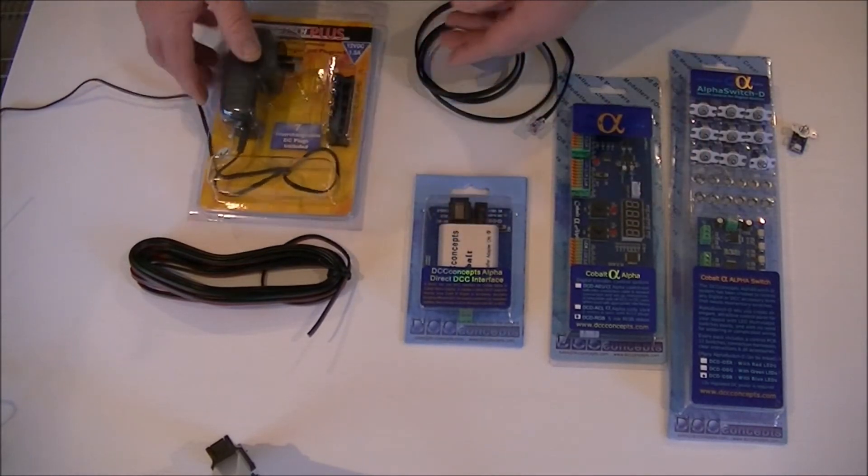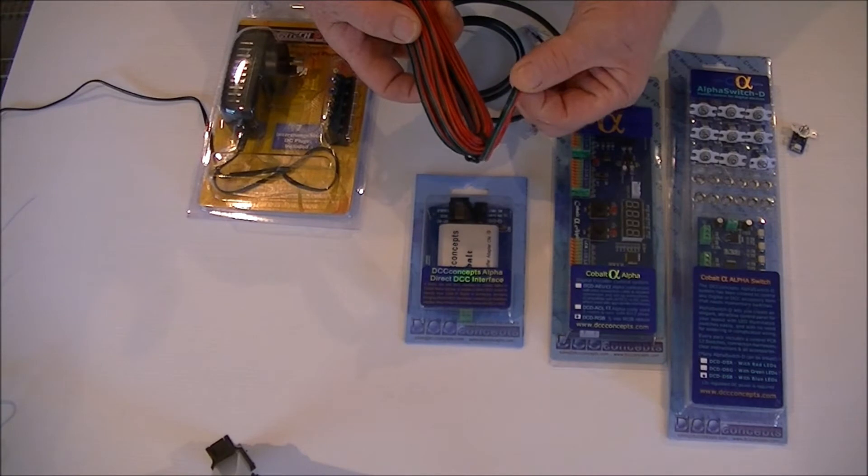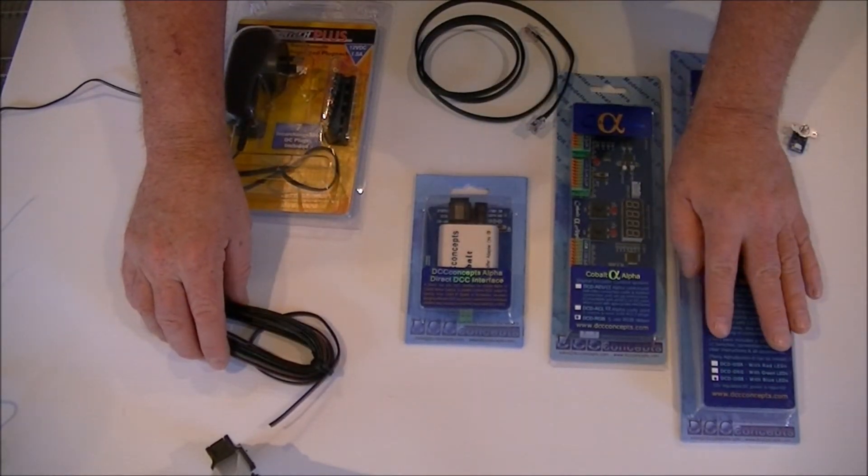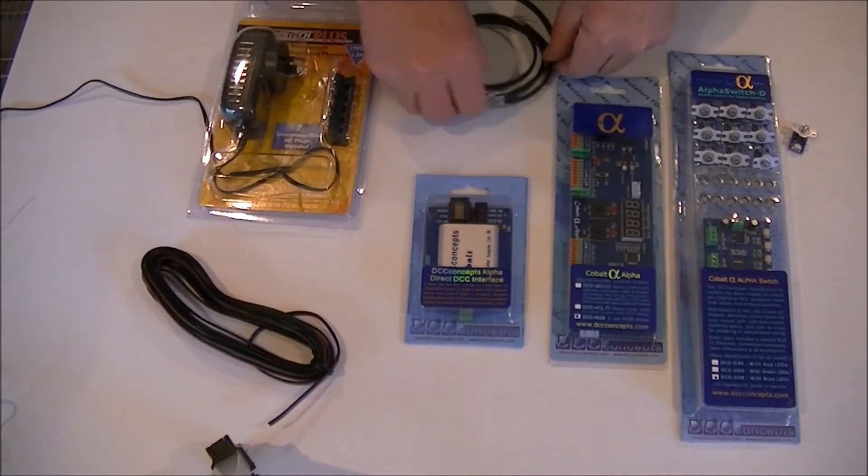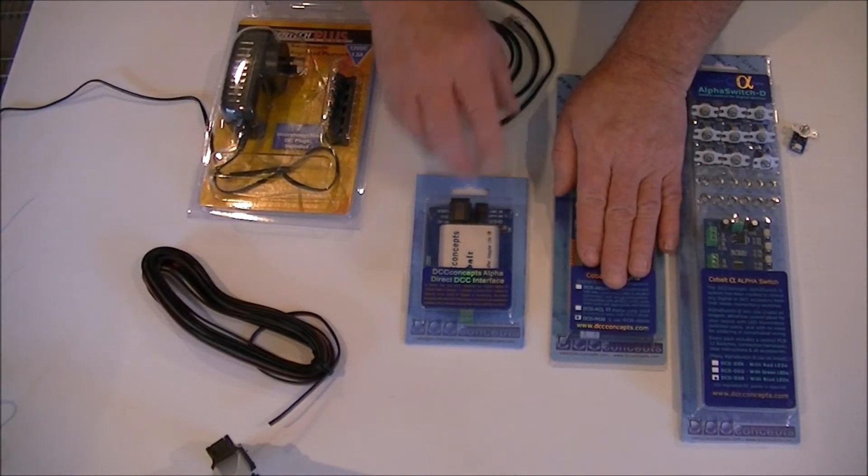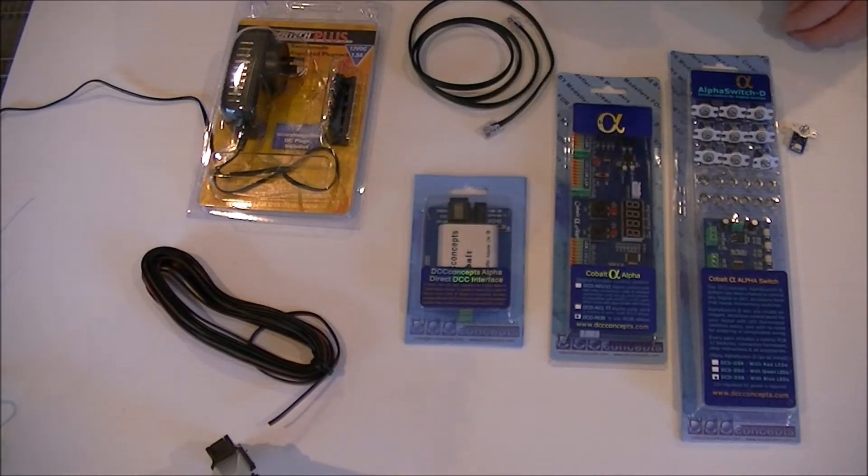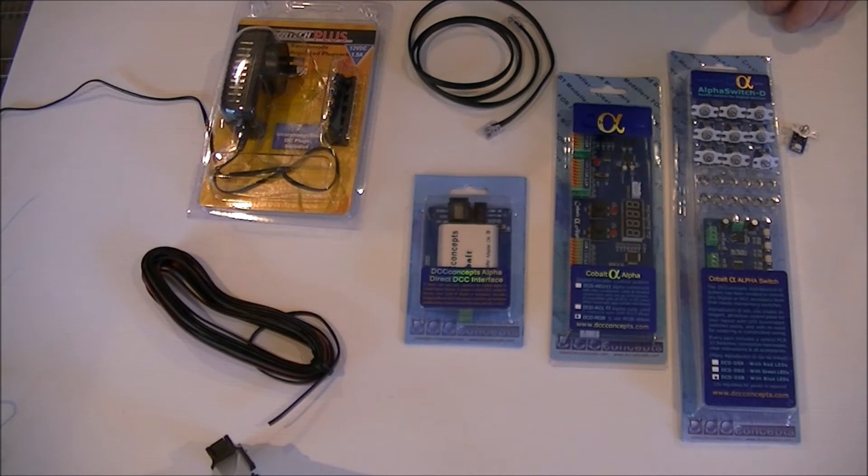This is a 1.5 amp one, and this will provide power to these units here. I've got a single plug. You need three wire ribbon wire. This connects your Cobalt Alpha to your cobalt encoder. This cable connects your cobalt encoder to your DCC sniffer. Okay, so let's open these up and have a little closer look at how they actually work.